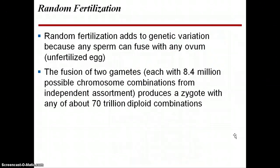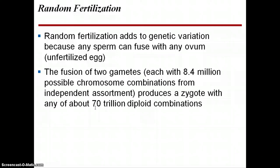The last way to add variation is random fertilization. Because any sperm can fuse with any ovum — an unfertilized egg — you can create a lot of different variation with just the two gametes coming together. In humans, because there are 8.4 million possible chromosome combinations from independent assortment for both sexes, that means you have 70 trillion diploid combinations that you can create. That's why humans all look so different — even within a family you can see differences, and across our whole species there are so many differences in appearance, traits, enzymes, and characteristics.